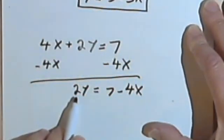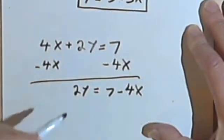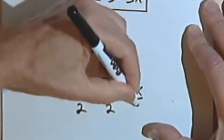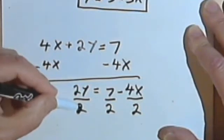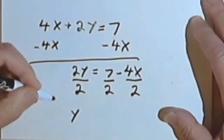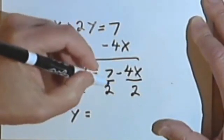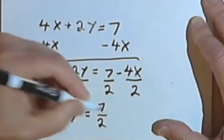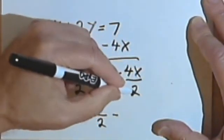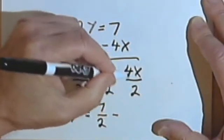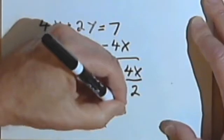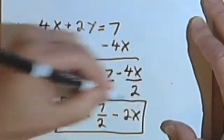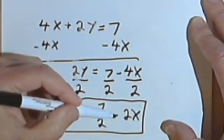And now I've just got to divide by 2 to get the y by itself. Now when I divide by 2, I have to divide everything by 2. So 2y divided by 2 is just going to give me y. 7 divided by 2... I can't reduce this fraction, so I'm just going to leave it as 7 over 2. 4x divided by 2... well, the 4 can be divided by the 2. So 2 goes into 4 2 times, and I've got y equals 7 halves minus 2x.